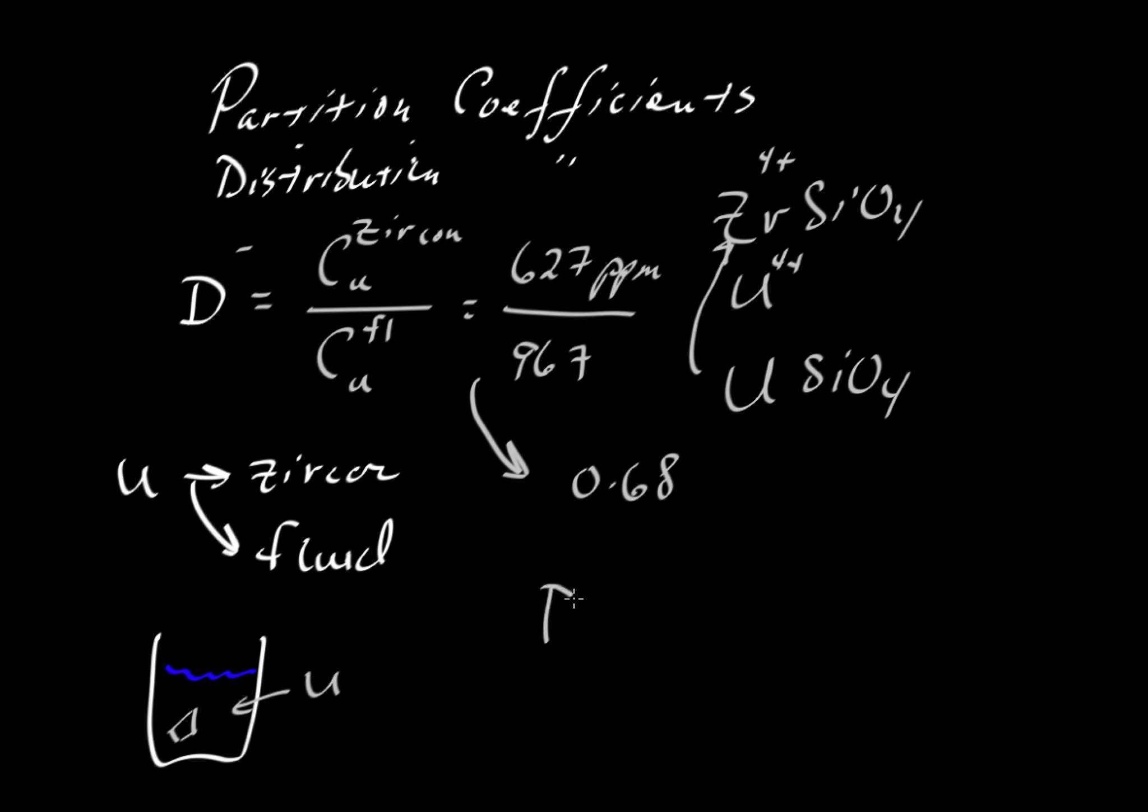We should be more specific about how we write this D. We write a subscript indicating the element being partitioned between the two phases. Here, the phases are water and zircon. We indicate the phases with abbreviations, like zrc for zircon and fl for fluid. So D subscript U with zrc/fl equals 0.68.